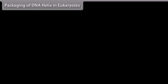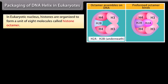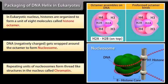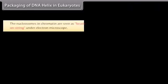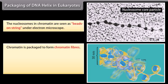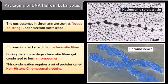In eukaryotic nucleus, histones are organized to form a unit of 8 molecules called a histone octamer. DNA, being negatively charged, gets wrapped around the octamer to form a nucleosome. Repeating units of nucleosomes form thread-like structures in the nucleus called chromatin. The nucleosomes in chromatin are seen as beads on a string under an electron microscope. Chromatin is packaged to form chromatin fibers. During metaphase, chromatin fibers get condensed to form chromosomes, a process requiring non-histone chromosomal proteins.